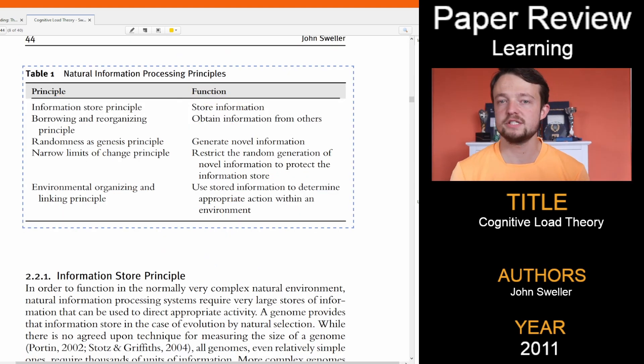What our brain does during learning is still not entirely clear, but we have lots of ideas. In cognitive load theory, there are five principles that are assumed to be true: we store information through the information store principle, get information from others by the borrowing and reorganizing principle, create novel ideas through the randomness as genesis principle, our ability to create novel ideas is limited by the narrow limits of change principle, and we use the stored information to make decisions through the environmental organizing and linking principle. Store, borrow, create, limit, use.